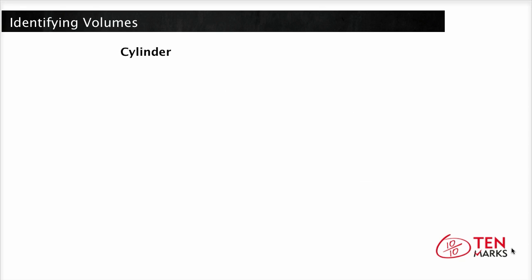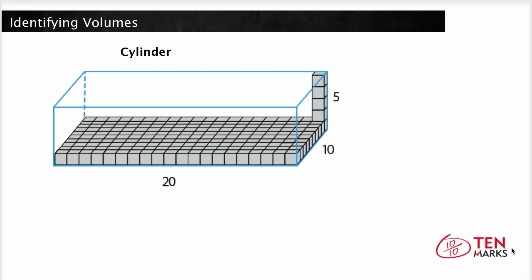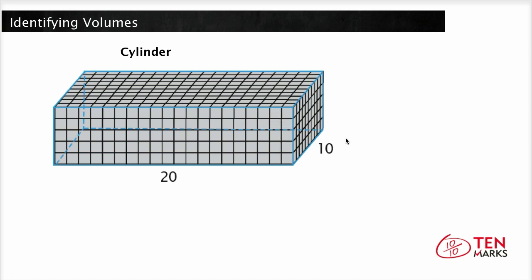Let's start with the cylinder. Remember how to find the volume of a rectangular prism: you need to first find the area of the base, which is length times width, and then find how many times you need to stack that base on top of each other until you reach the top. So the volume equals the area of the base times the height.